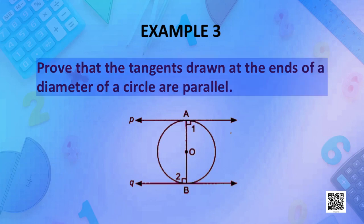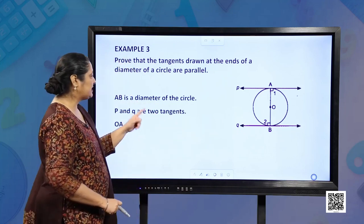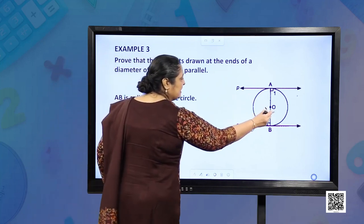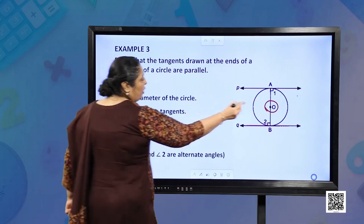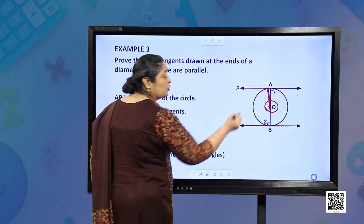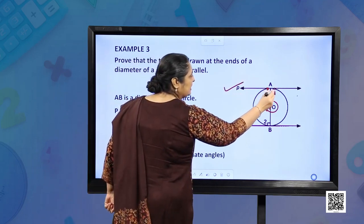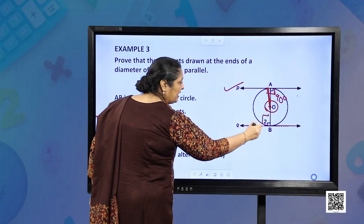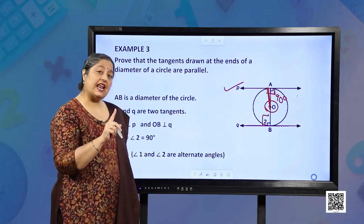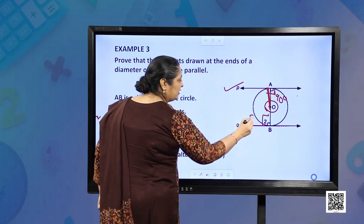Example number 3: Prove that tangents drawn at the end of the diameter of the circle are parallel. We have a circle with diameter AB, centre O, and P and Q are the two tangents. OA is the radius. Since OA is the radius and P is the tangent, this angle is 90 degrees. Similarly, this angle is again 90 degrees, because the radius forms an angle of 90 degrees with the tangent at the point of contact.